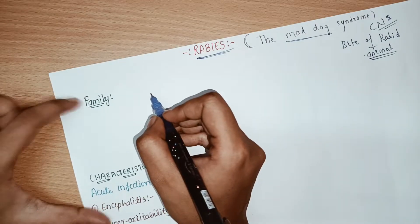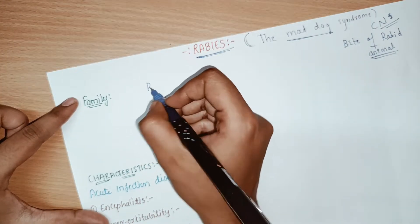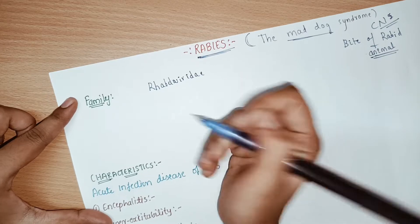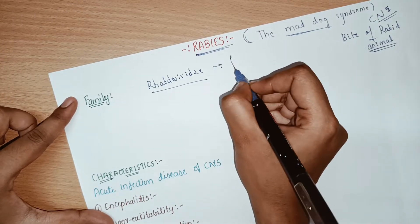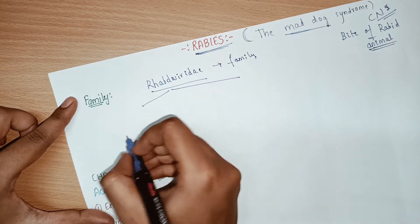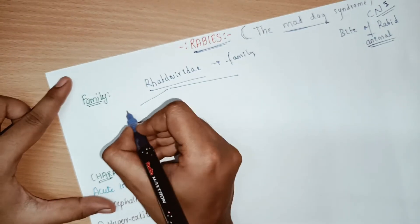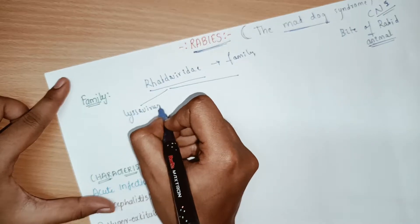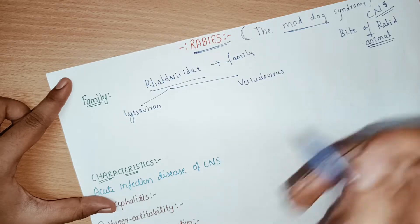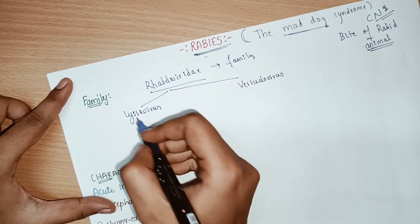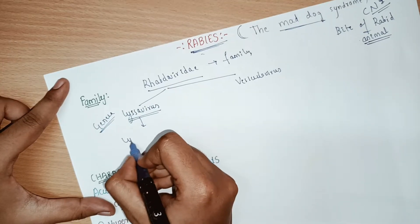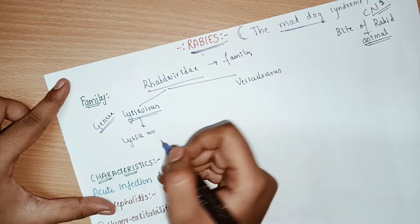Rabies virus belongs to the family Rhabdoviridae. Under this family there are two genera: one is called Lyssavirus and the other is called Vesiculovirus. The origin of rabies actually comes from the genus Lyssavirus. In general, 'lyssa' means rage — rage meaning something violent or furious.